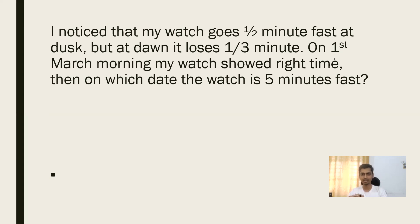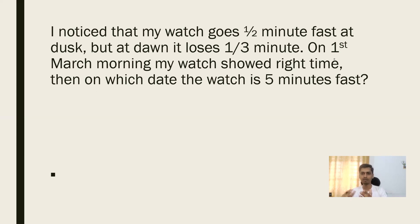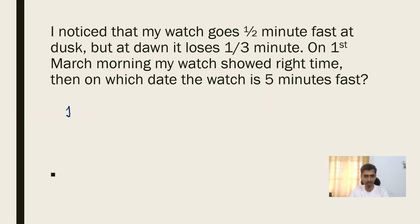Here is what's given: I have a watch, and on the first of March morning it shows the correct time — let's say 5 o'clock. This watch gains half a minute fast at dusk, meaning by evening it will be half a minute fast. And at dawn — that is, by morning — it loses one-third of a minute.